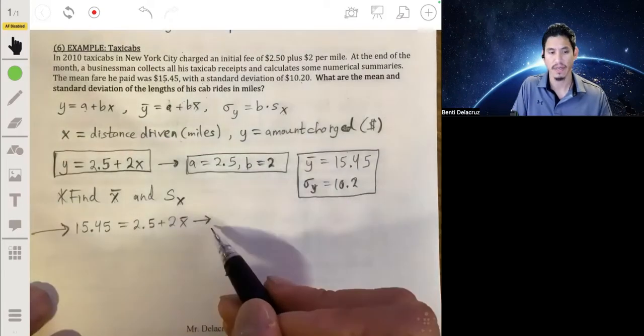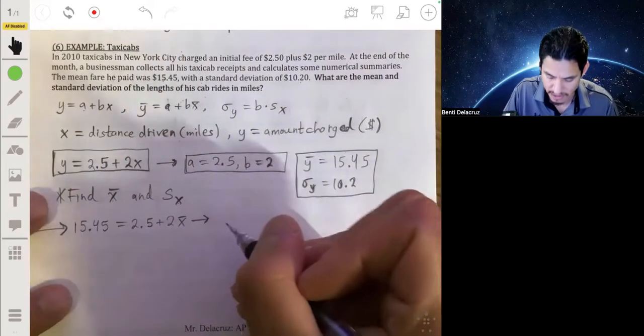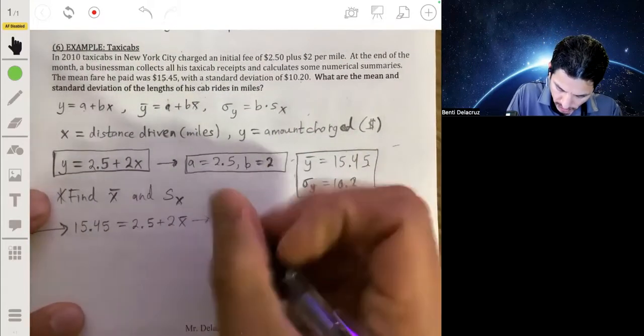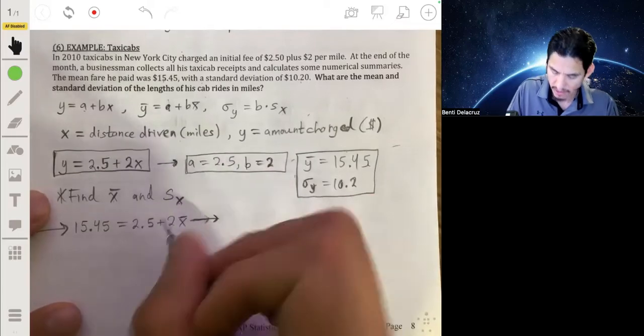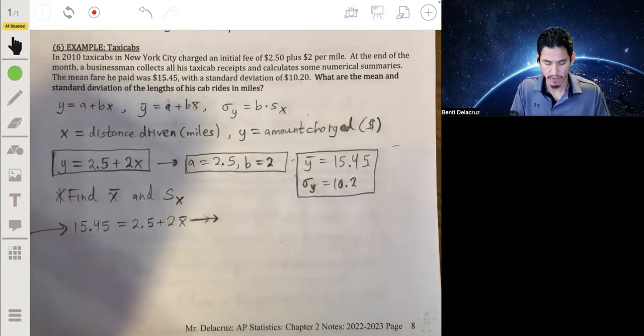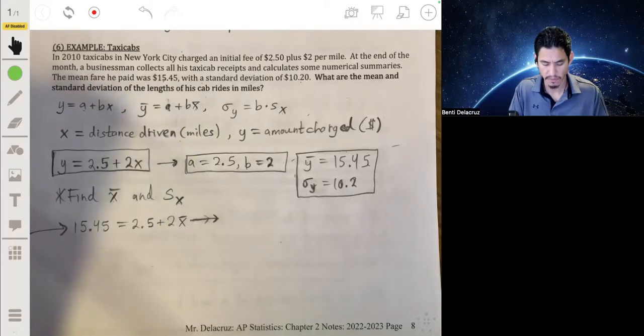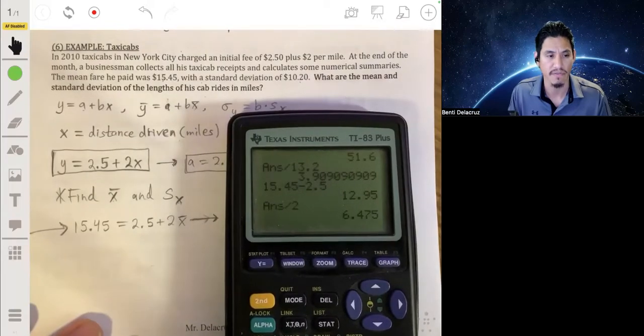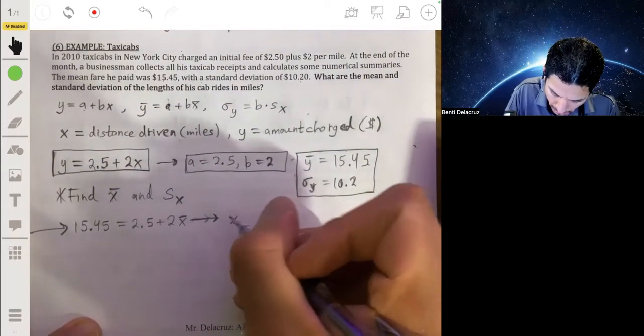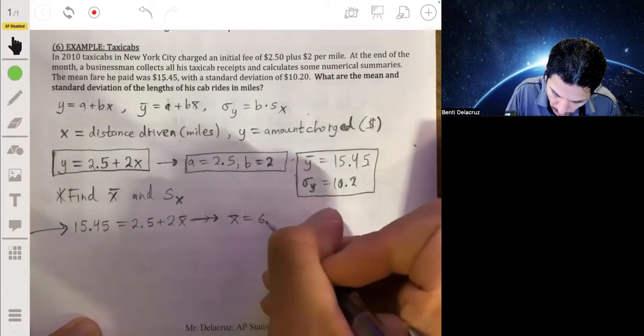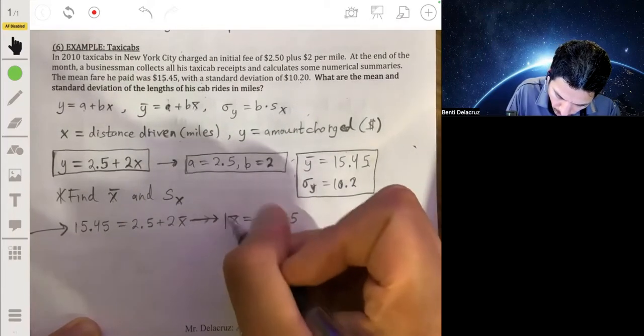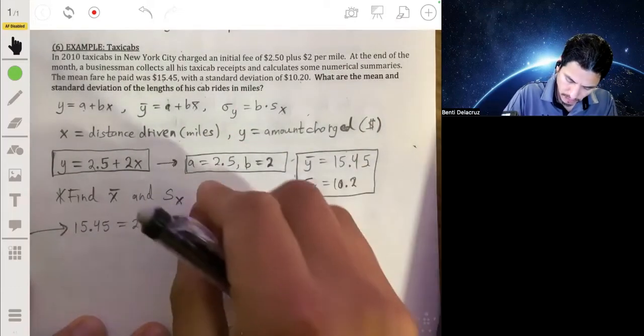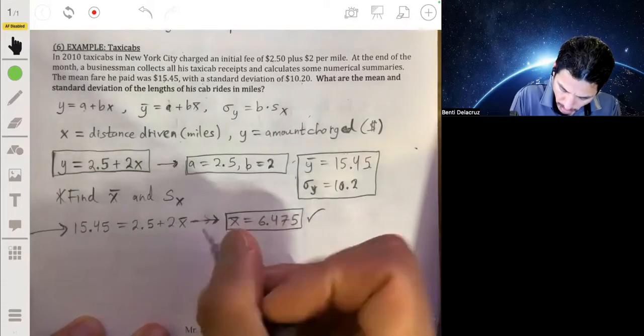plus 2 times x bar. Just make sure your algebra isn't bad. You don't want to screw up. So take away the 2.5 and then divide by 2. 15.45 minus 2.5 divided by 2. So we'll get that x bar is 6.475. That's one of our answers.